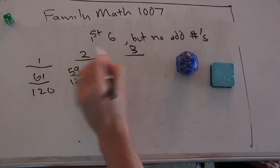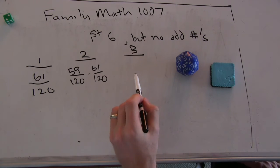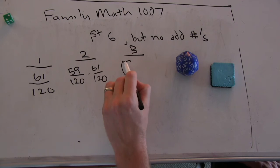Yeah, well, what's it going to be on round three? Can you tell me? What's the chance that I see my first six on round three? 59 over 120 times 59 over 120 times 61.